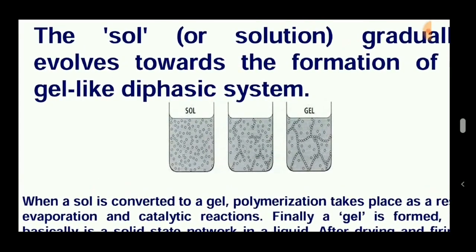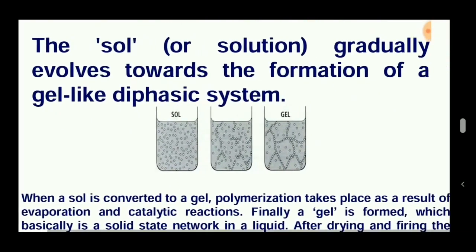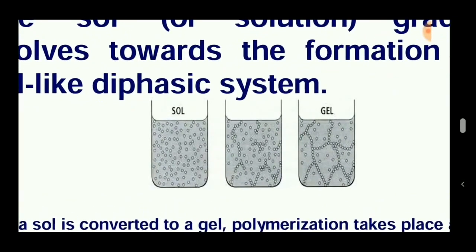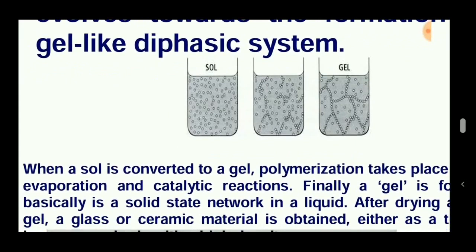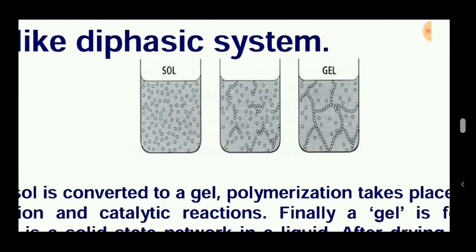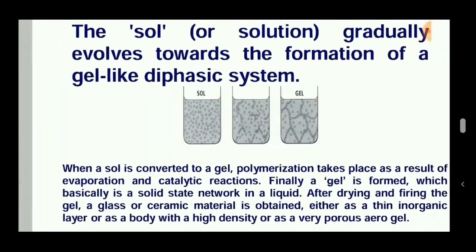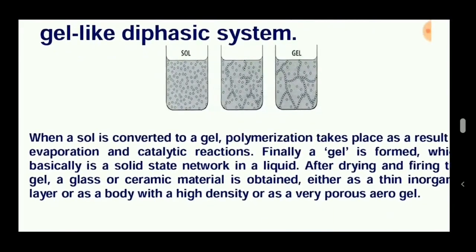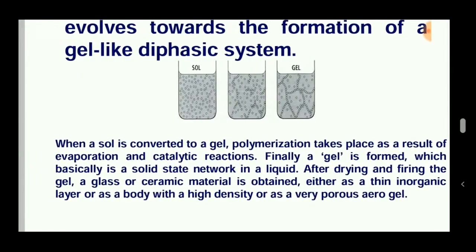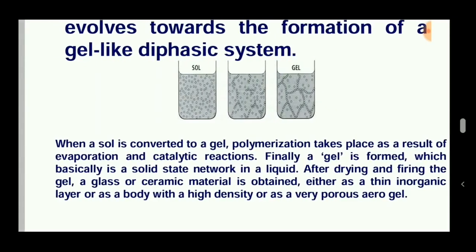Though it is an easy process, it also has certain disadvantages. This process gradually evolves towards the formation of a gel-like diphasic system. One phase consists of a reinforcement and the other phase consists of a matrix or a liquid. When this undergoes the polymerization process, it forms a gel-like structure, and finally when it is heated in a furnace we can get the ceramic matrix composites. When sol is converted to gel, polymerization takes place as a result of evaporation and catalytic reactions.